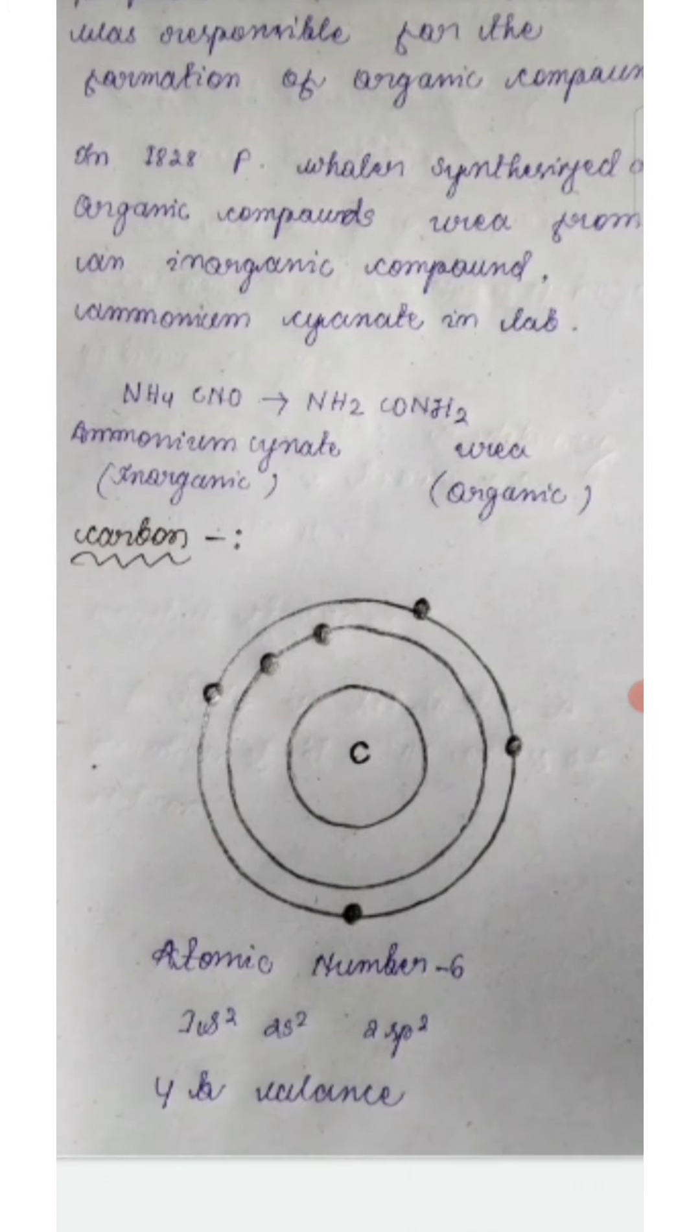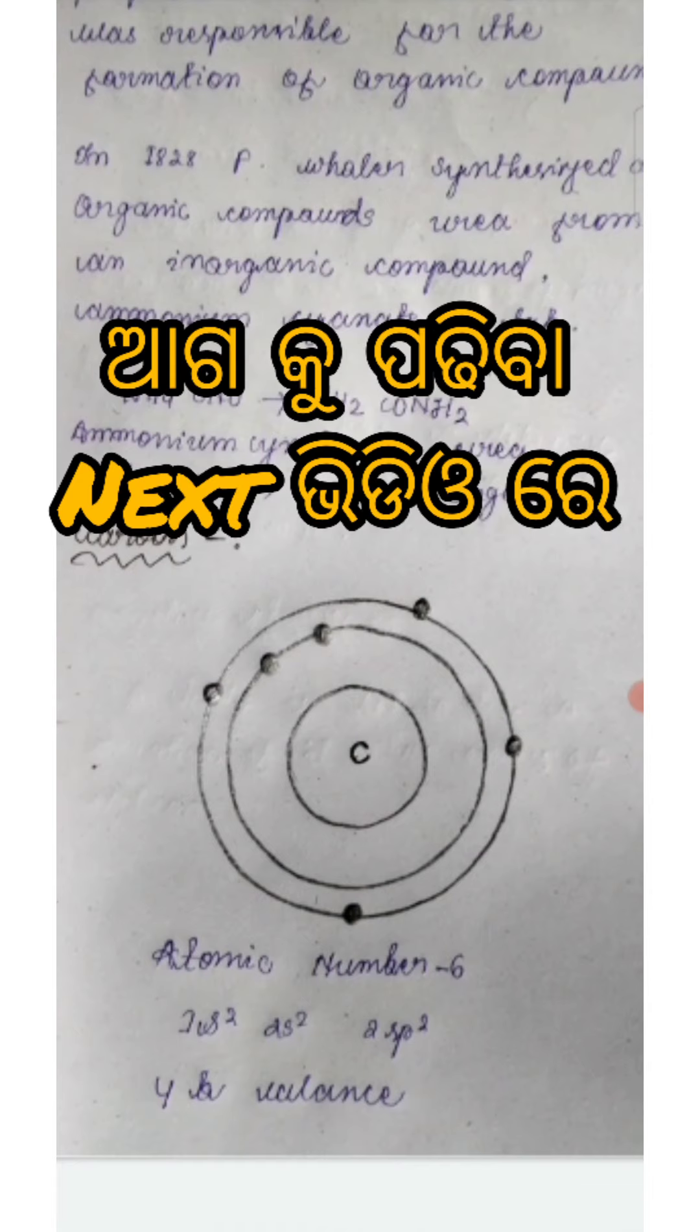Carbon. Carbon atomic number 6. Carbon electron configuration 1s² 2s² 2p². Carbon valence electrons 4. Carbon is most important.